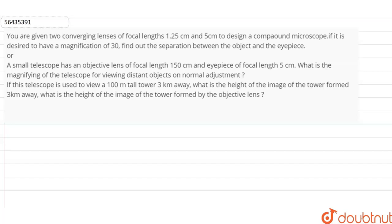Second, a small telescope has an objective lens of focal length 150 cm.